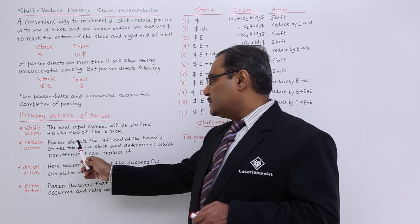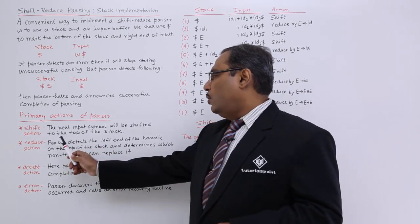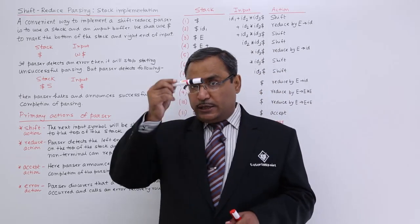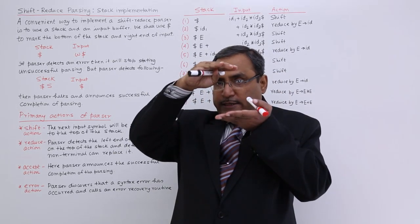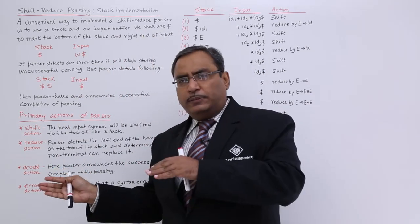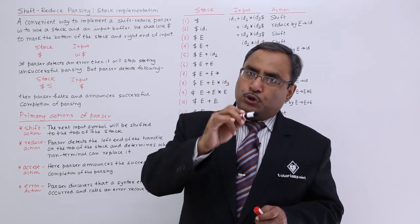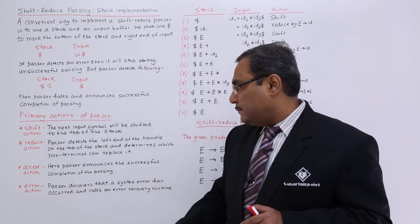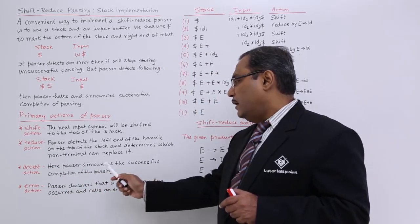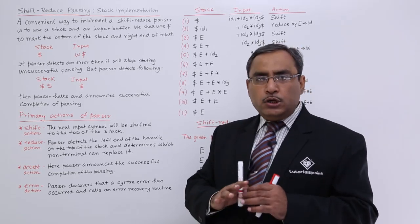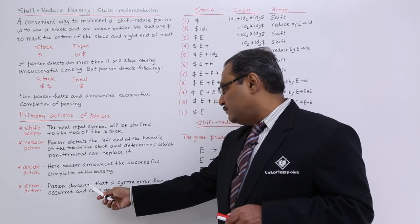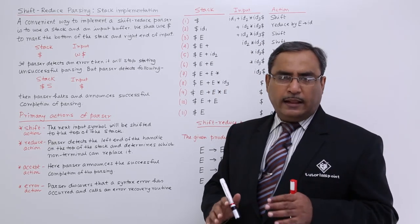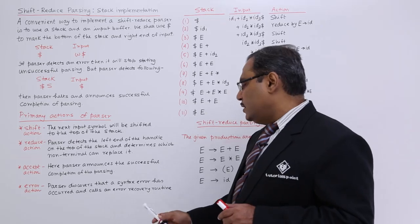In case of reduce action, the parser detects the left end of the handle on the top of the stack and determines which non-terminal can replace it. The parser checks up to which limit it is finding a handle, pops that handle from the stack, and pushes one non-terminal on top of the stack depending upon the productions in the grammar. For the accept action, the parser announces successful completion of parsing — the string has been accepted and contains no syntax error. In the error action, the parser detects a syntax error and calls an error recovery routine to handle the situation.